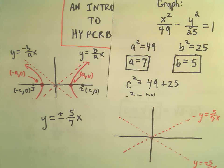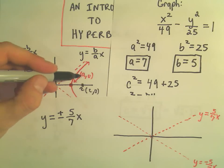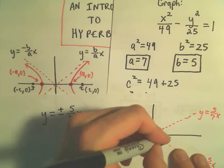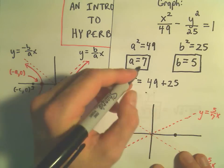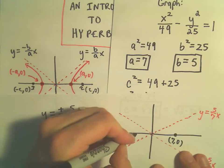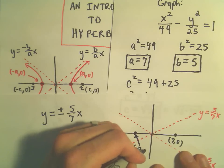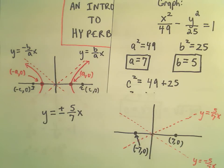My vertices occur at positive a zero and at negative a zero. So my vertices are going to occur at seven comma zero. And also at the point negative seven comma zero. And really at this point you've almost got everything you need to do a decent little graph.